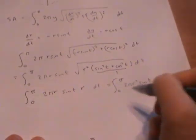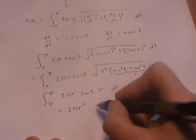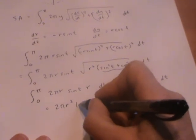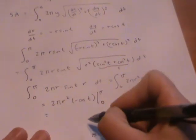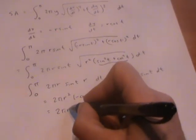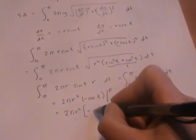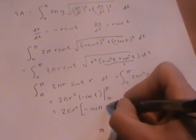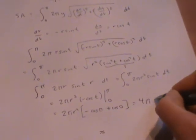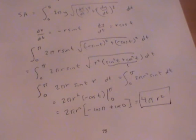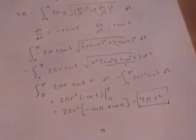If I pull out the 2πr² and integrate sin(t), I get -cos(t). Evaluate between π and 0, I end up with 2πr² times (-cos(π) + cos(0)), which gives me 4πr² as wanted. That's all for the video on surface area. See you in class.